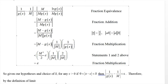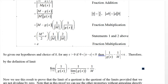So we've shown that |1/g(x) - 1/m| < ε, which by the definition of limit means the limit as x approaches c of 1/g(x) is 1/m — that is, 1 over the limit as x approaches c of g(x).